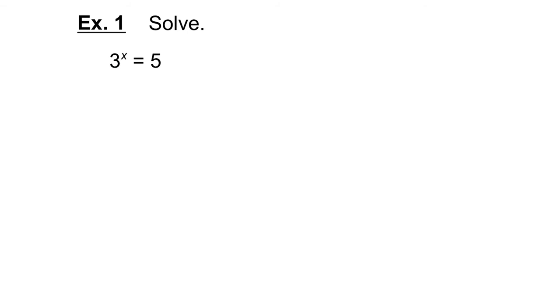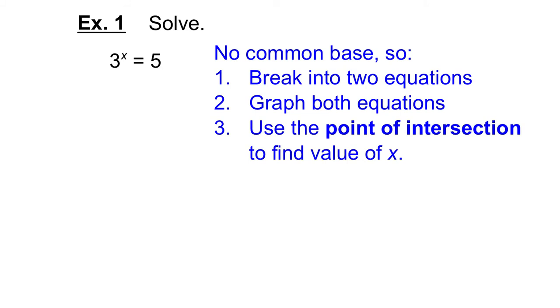Okay, so here I have an equation to solve. 3 to the exponent x equals 5. And right off the bat, I can see that there's no way I can write these as powers with a common base. 5 can't be written as 3 to the exponent something. Or at least you can't do it with nice numbers. So we need a way to solve this. So I basically have 3 steps. Because there's no common base, we're going to break it into two separate equations. I'm going to make an equation called y equals 3 to the exponent x and another equation called y equals 5.